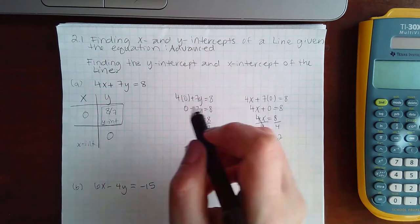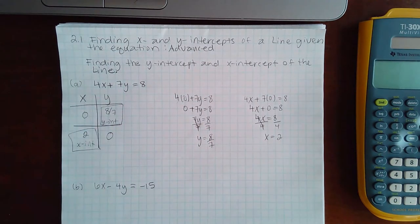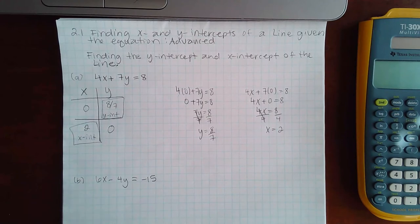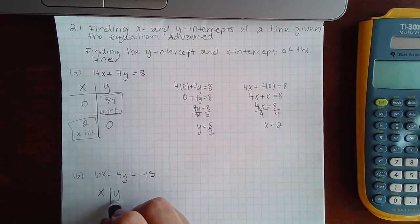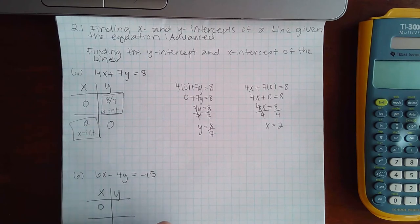And so my x intercept is two. So similarly, if I do this problem again, I'm just plugging in zero for x, zero for y. This one gives me the y intercept, this one gives me the x intercept.